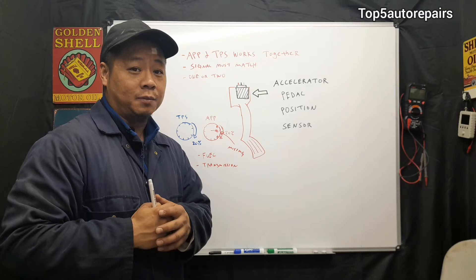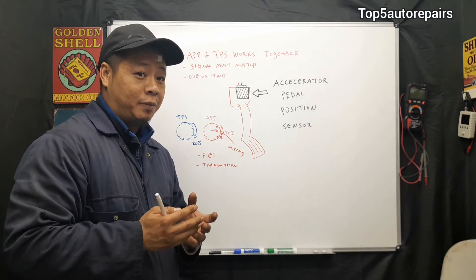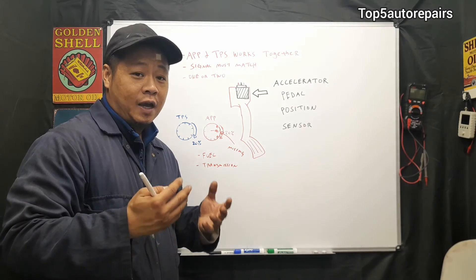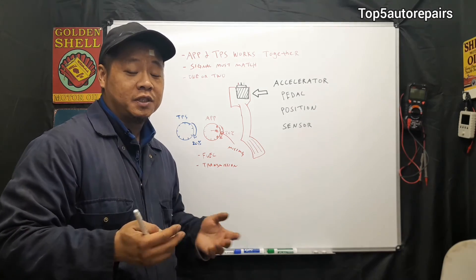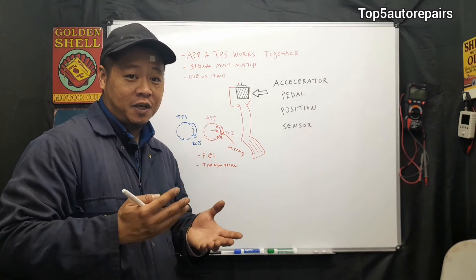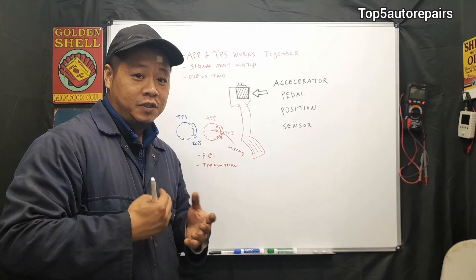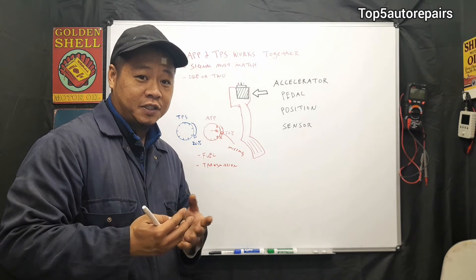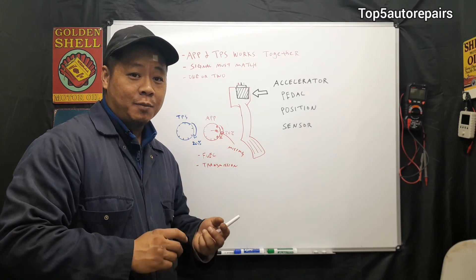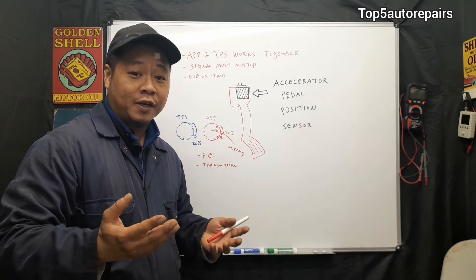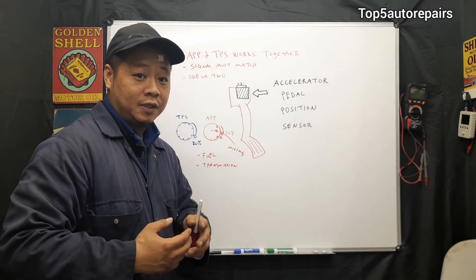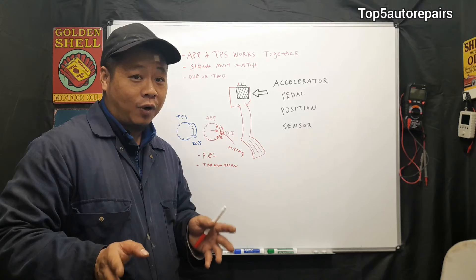The next common symptom is erratic shifting. The APP sensor sends signals to the computer to help improve transmission shift points. If the APP sensor fails, the transmission may not shift properly. You're going to experience some sort of shifting issue. The transmission may shift erratically, have delayed shifting, or have jerking when you step on the gas pedal. That's going to be a transmission issue, but not a transmission problem.